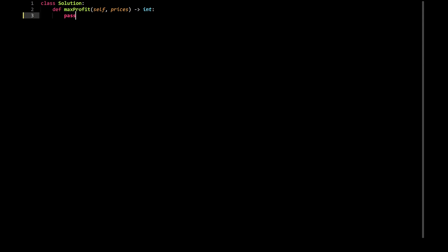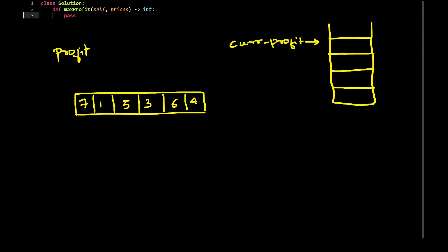So let's say you have an array like this. Initially I would set the profit value equal to 0. The reason being, if you have the array in a non-ascending ordered fashion, then you would make no profit and can return profit equal to 0. For any other array, I will have two pointers — I'll call this the left pointer and I'll call this the right pointer.